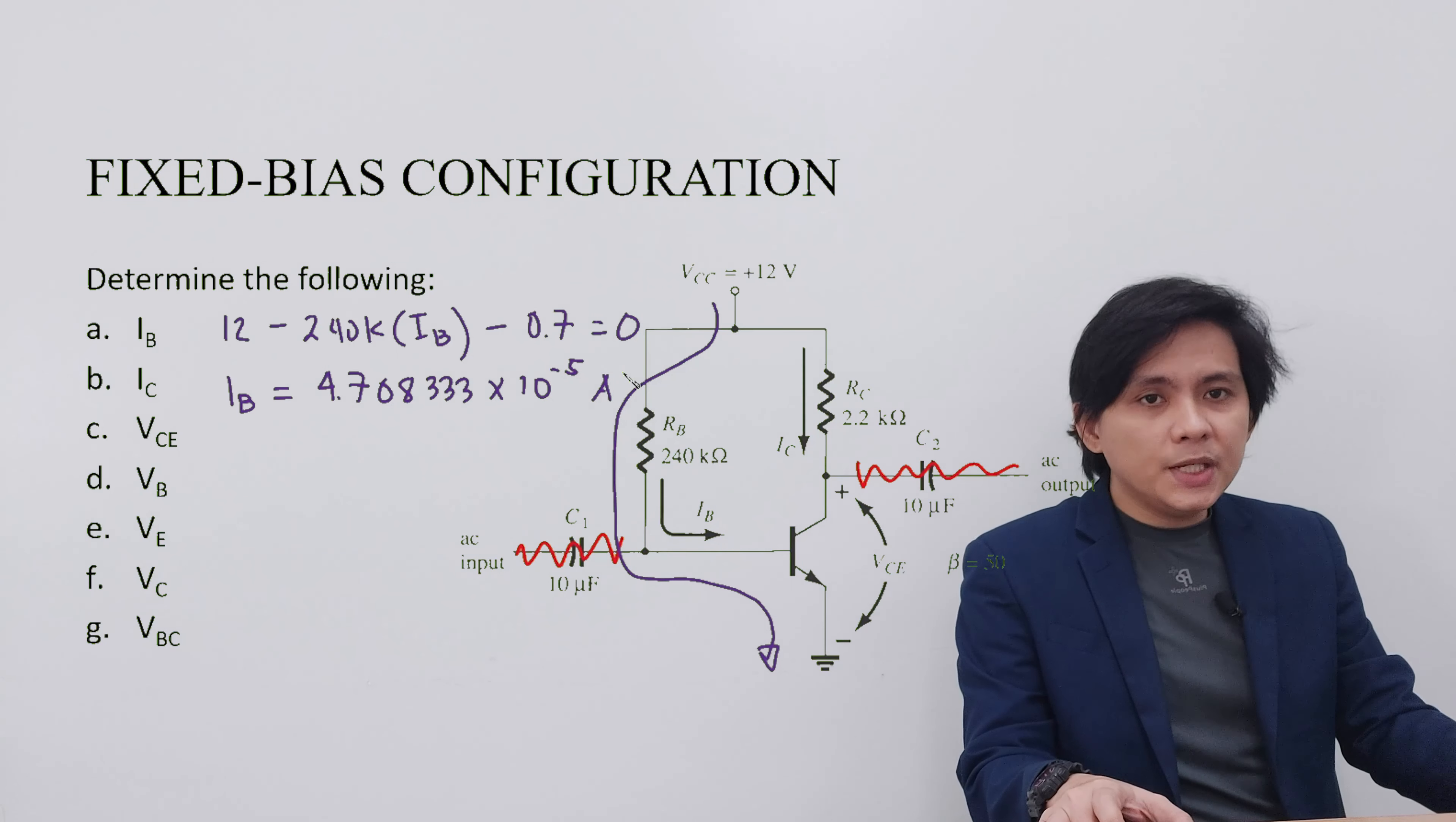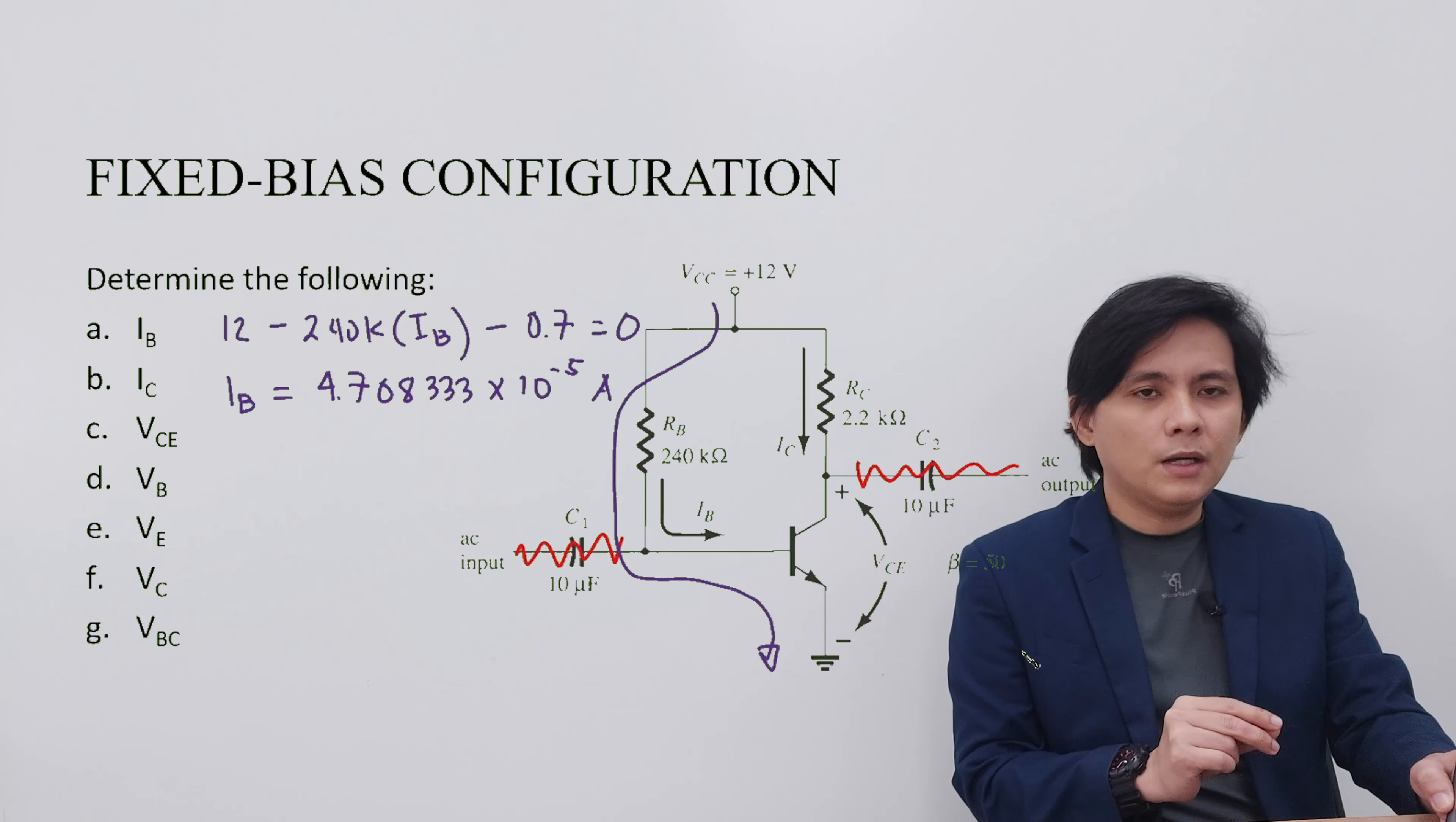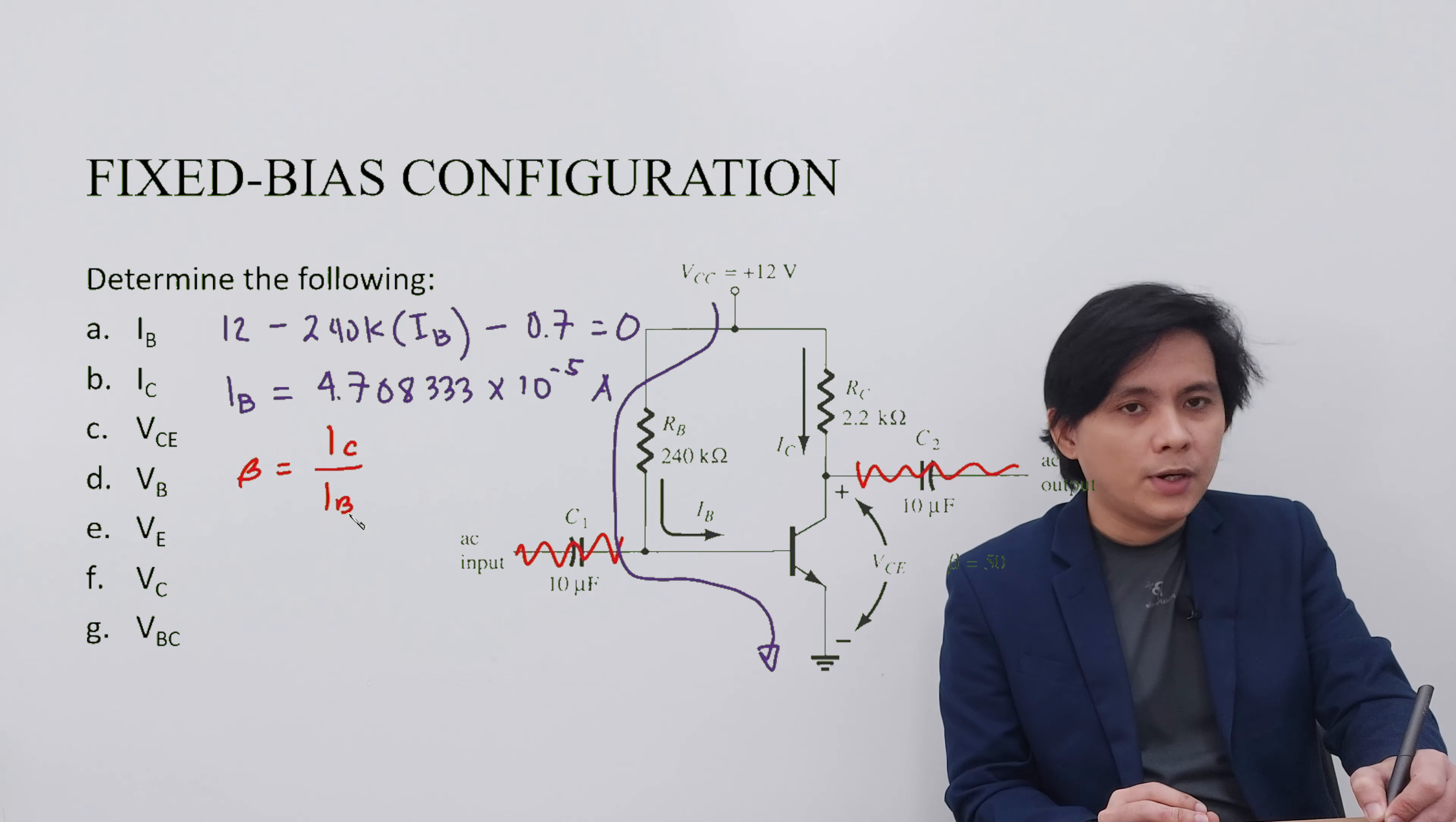After solving IB, we can solve IC by doing a very simple step. As you can see, the beta is given, that's 50. There is a relationship between IB and IC. Remember that beta is equivalent to IC over IB.